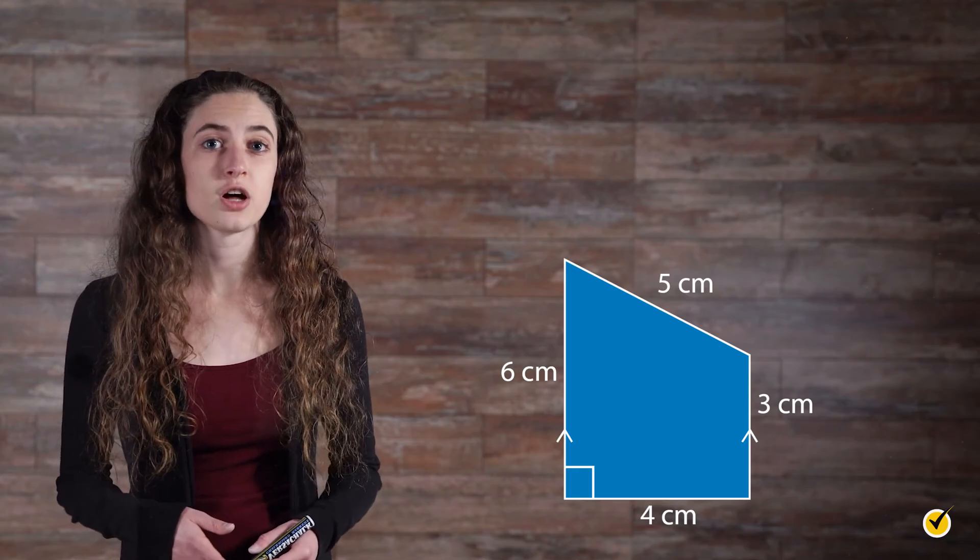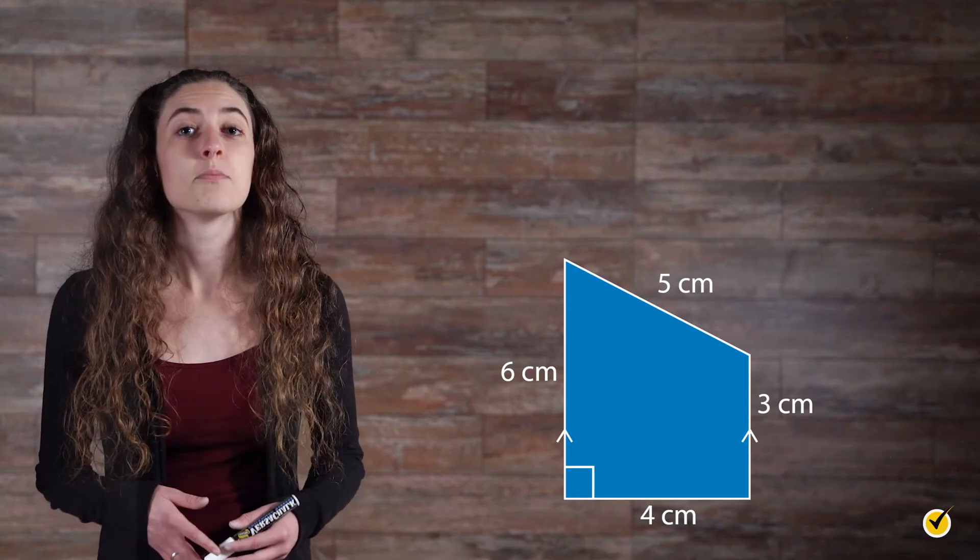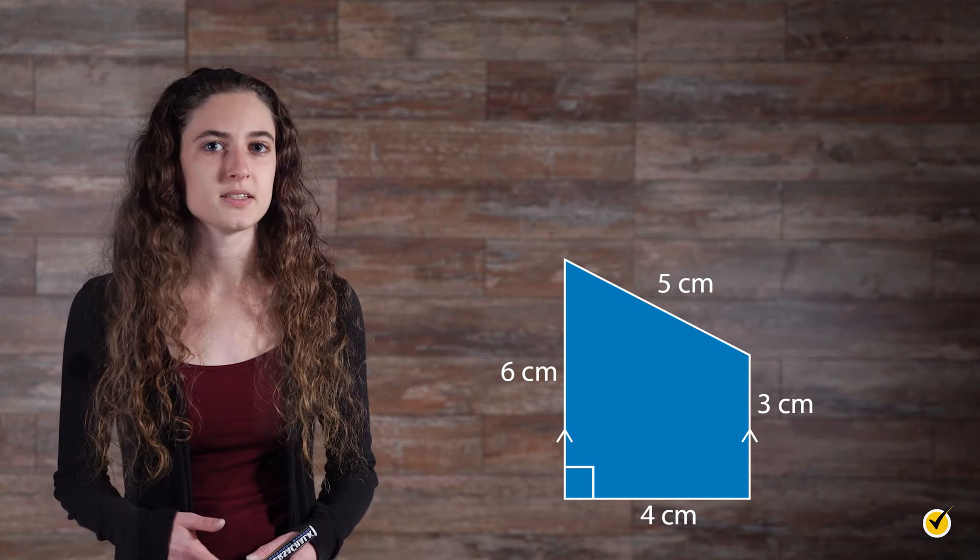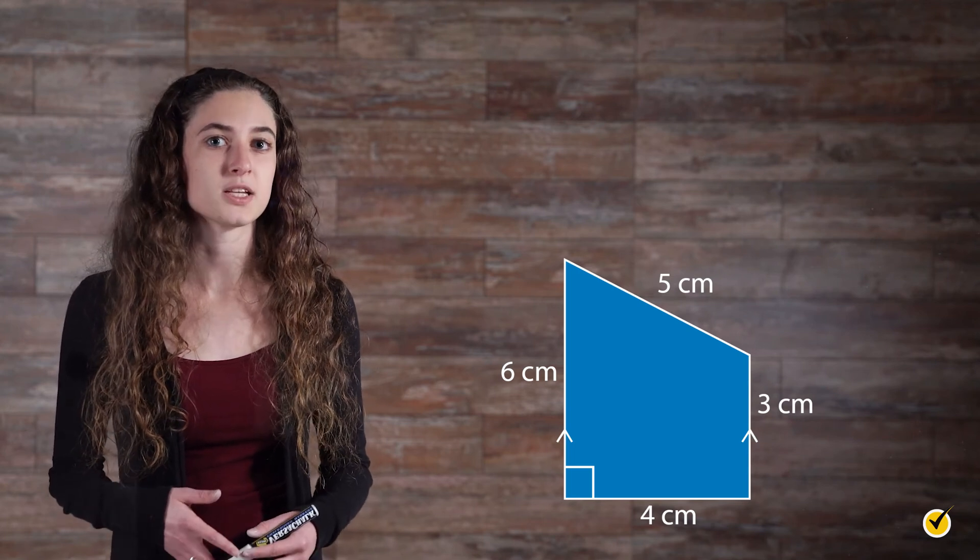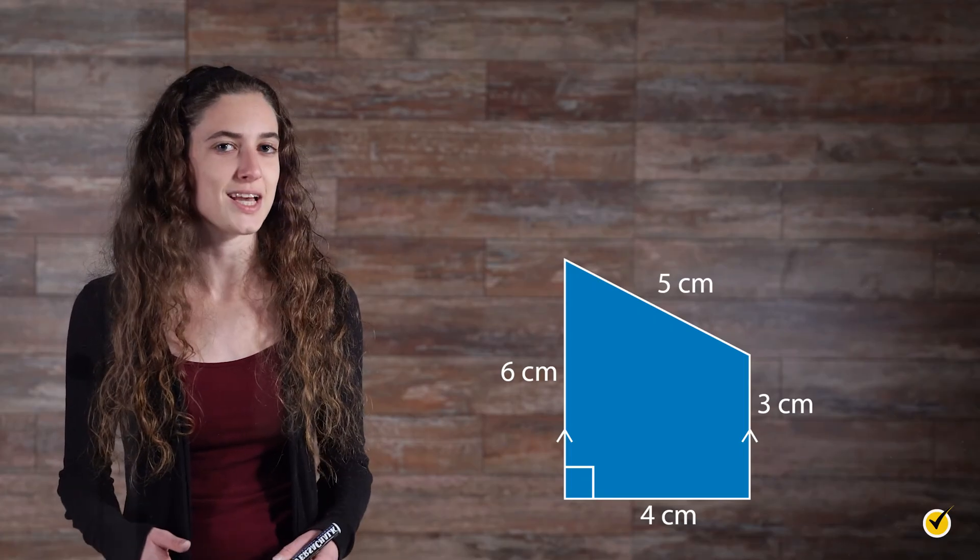There is no dashed or colored line inside the trapezoid connecting the bases that would clearly be labeled as the height, but the bottom side is connecting the bases and is perpendicular to them, as we can tell by the right angle symbol. So four centimeters is the height, even though it's sideways.